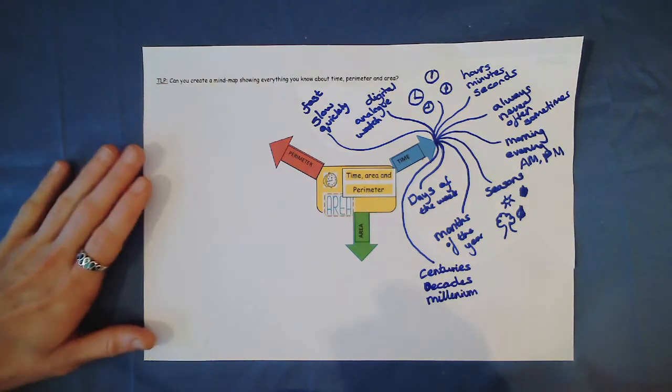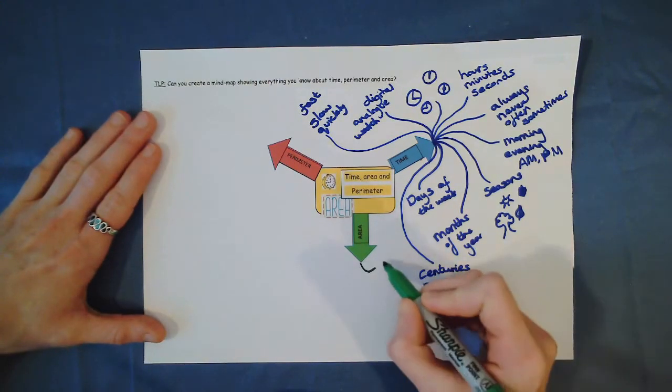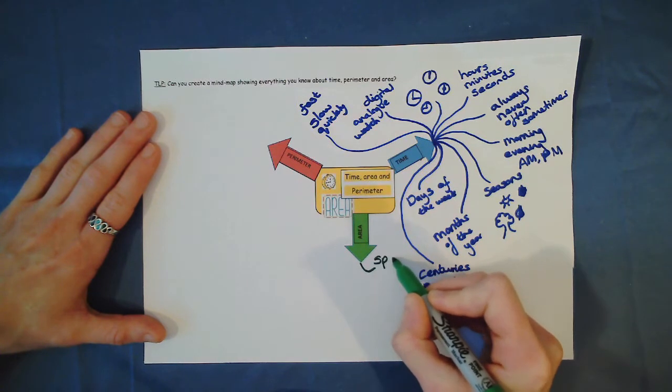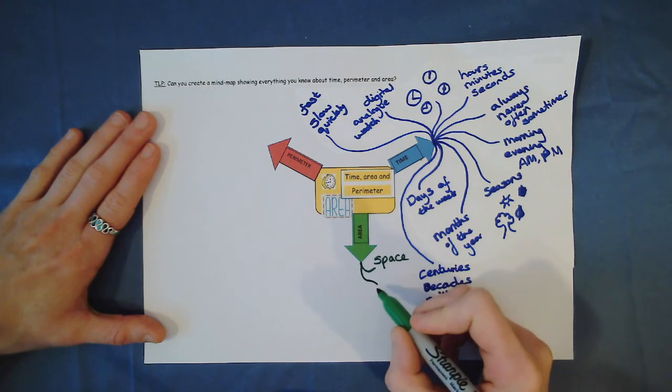Now let's have a think about area. What do we know about area? Well we know that it is the space that a shape takes up. It is the area covered.